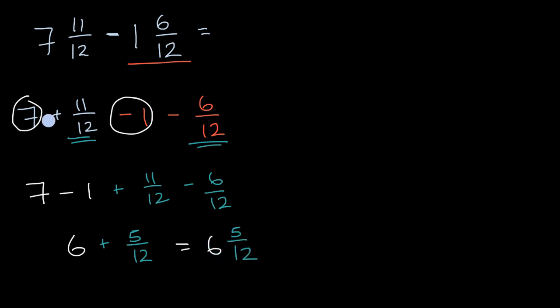Now as you get more used to this, you could do some of this maybe even in your head. You could say, hey look, look at the whole number parts. Seven minus one is going to give me six. And then 11 twelfths minus six twelfths is going to give me five twelfths.